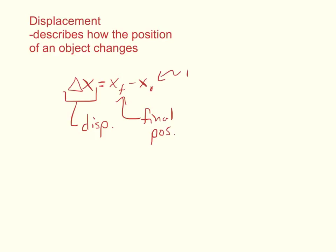x naught is our initial position. You can think of x naught with this little zero as meaning that's where we're starting — that's our zero point. So our final position minus our initial position gives us our displacement, or how far away we are from where we started.